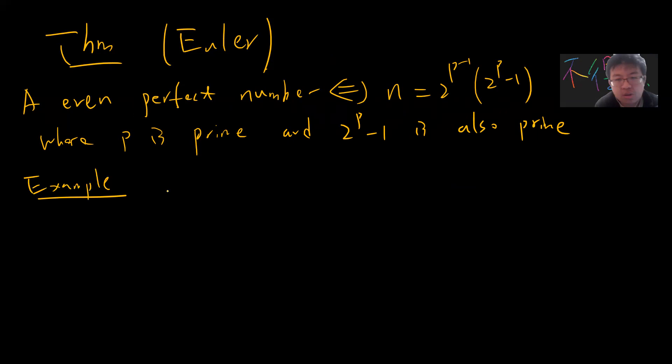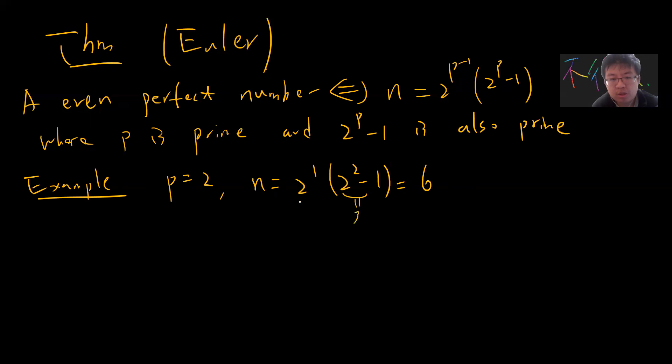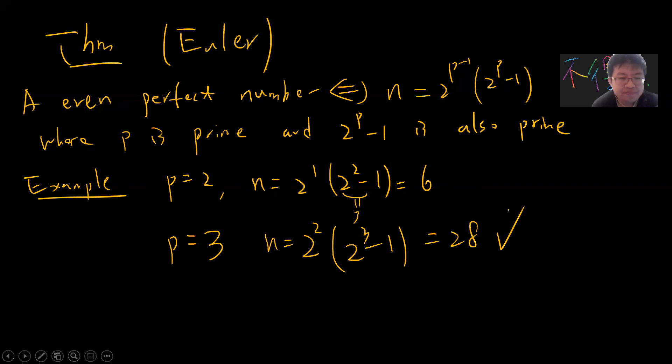Let's verify with examples. For p = 2: n = 2^1 × (2^2 − 1) = 2 × 3 = 6 — both 2 and 3 are prime, so it works. For p = 3: n = 2^2 × (2^3 − 1) = 4 × 7 = 28 — and 7 is prime, confirming that 28 is a perfect number. This theorem completely characterizes even perfect numbers.